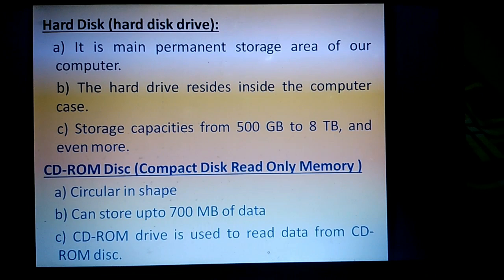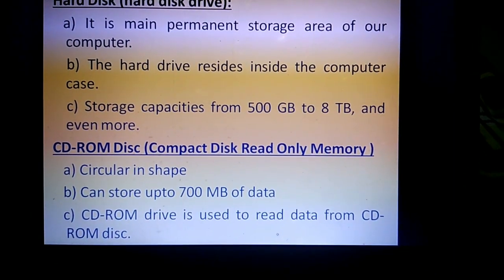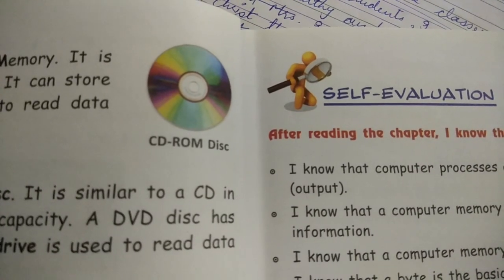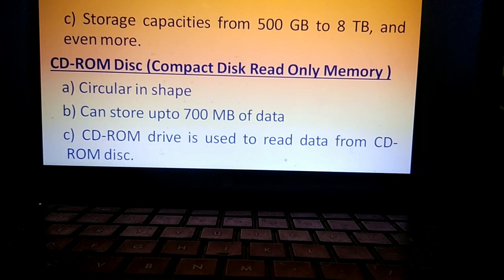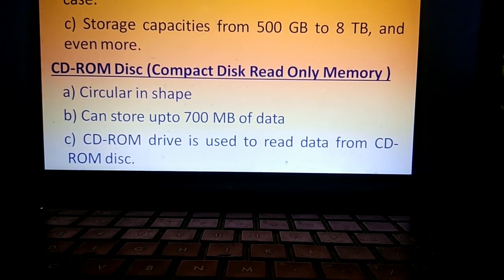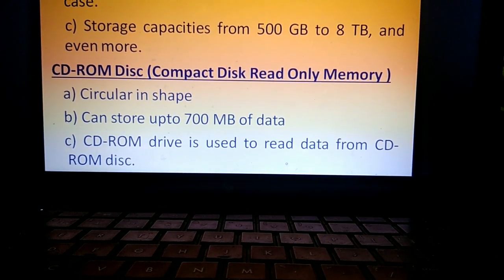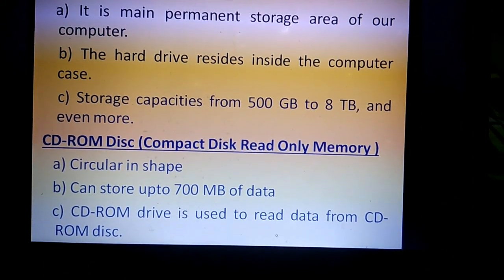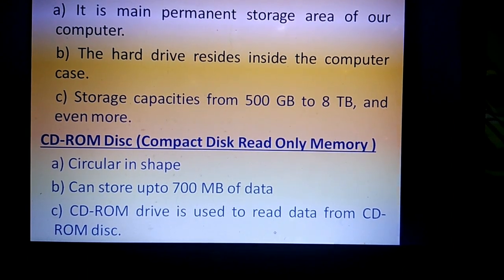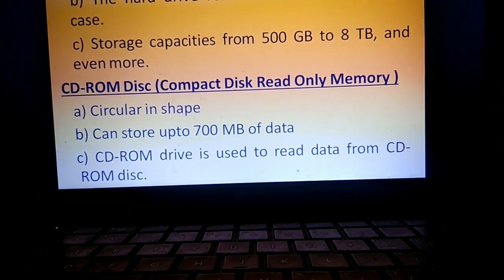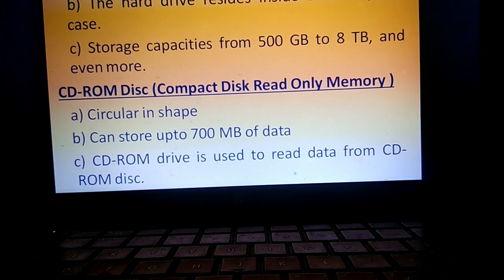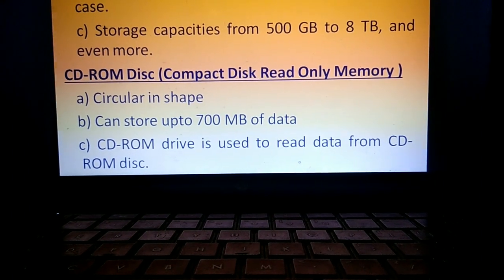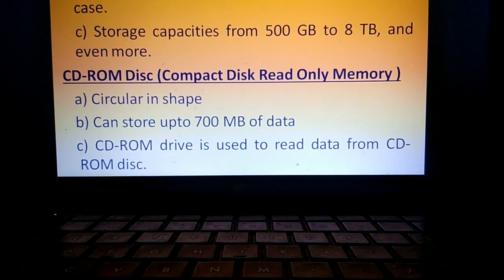The next is CD-ROM, which stands for Compact Disc Read-Only Memory. Here is a picture of a CD-ROM — it is circular in shape and can store up to 700 MB of data, which is less than a hard disk. A CD-ROM drive is used to read data from a CD-ROM disc.